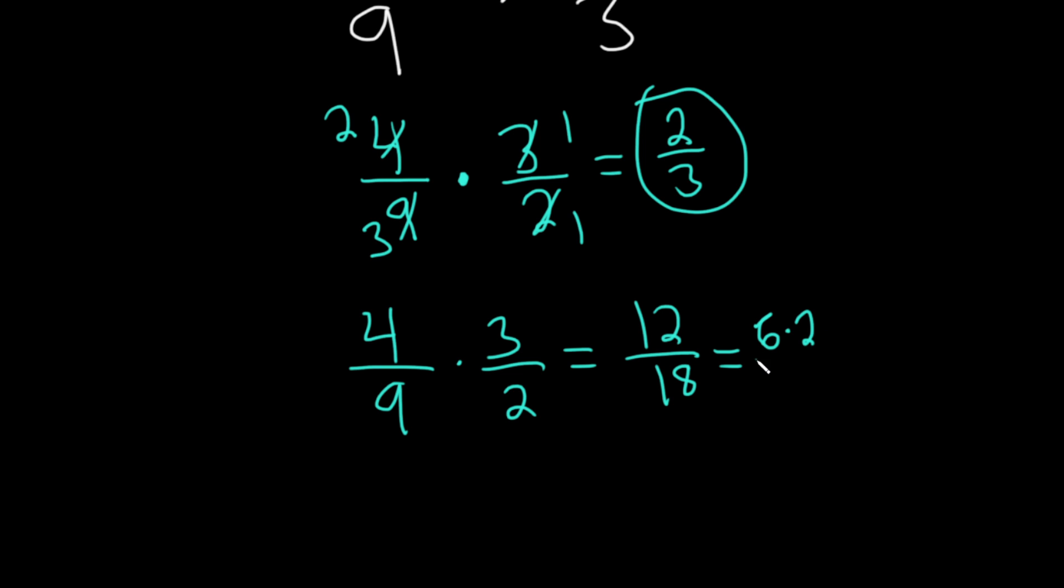Because look, this is 6 times 2, and this is 6 times 3. And look at that, oh, we get 2 thirds, exactly the same thing we had using the other method.